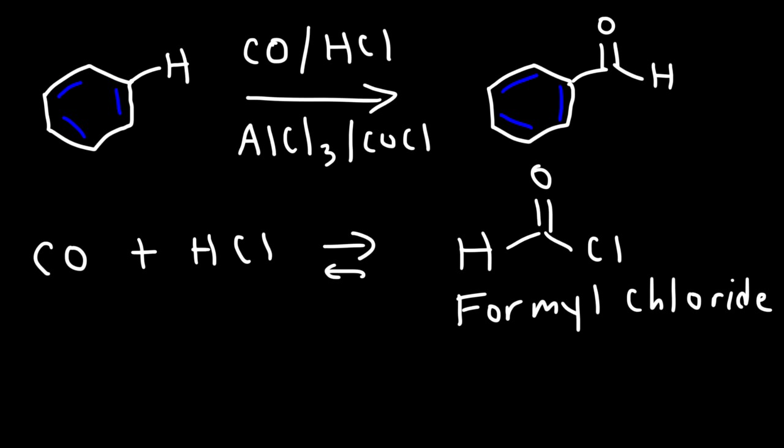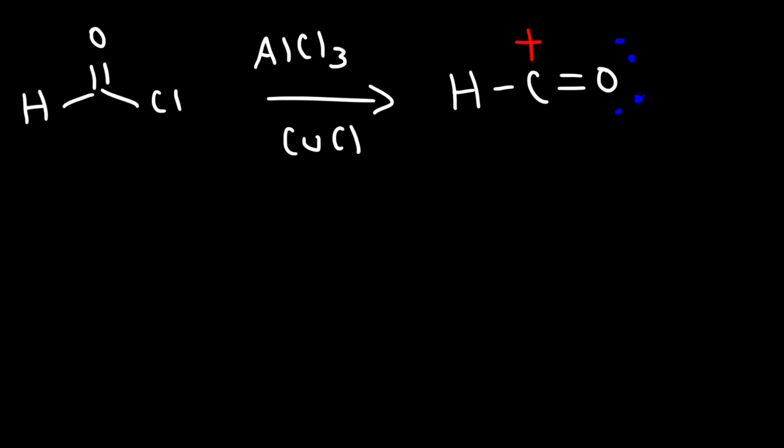And then after that, we're going to react it with aluminum chloride and copper chloride. And so this is going to create this intermediate. This intermediate is called the formyl cation. And we're going to use this intermediate to react it with benzene. And we're also going to get AlCl4 minus as a side product.